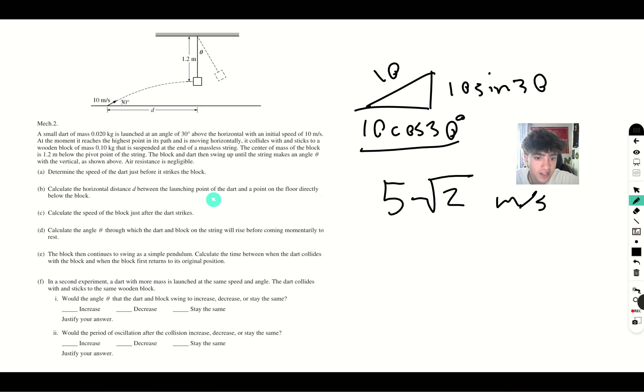Next, calculate the horizontal distance d between the launching point of the dart and a point on the floor directly below the block. We know that our horizontal velocity is 10 sin 30. Sin 30 is 1 half, so our initial velocity is just 5.